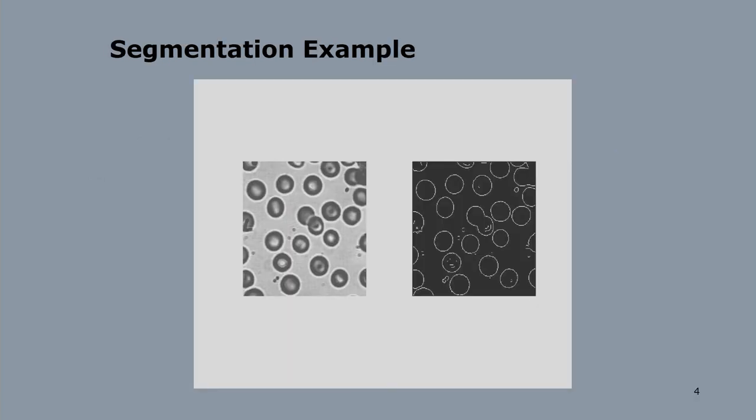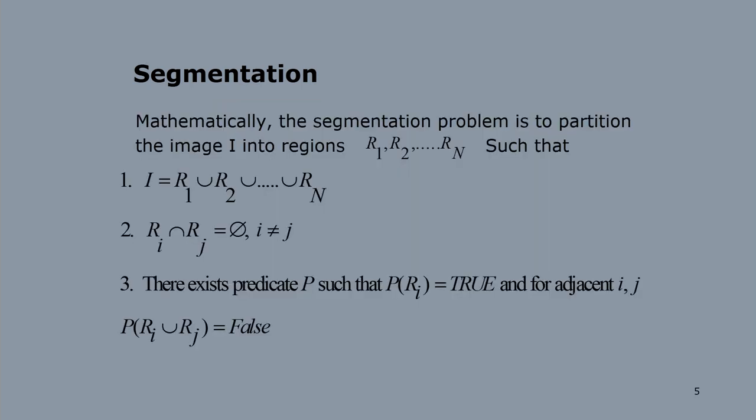Here I have shown one example of image segmentation: the first is the input image and the second is the segmented output. Mathematically, the segmentation problem is to partition the image i into regions r1, r2, ..., rn, so i equals r1 union r2 union r3 and so on. If I consider the intersection of two different regions ri and rj where i is not equal to j, that intersection will be the empty set phi — meaning the regions do not overlap.